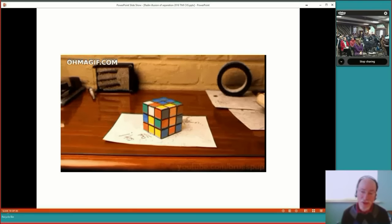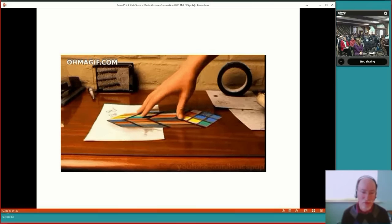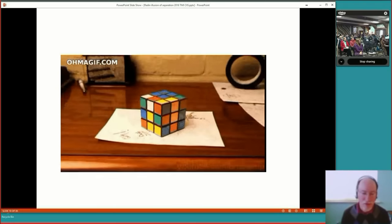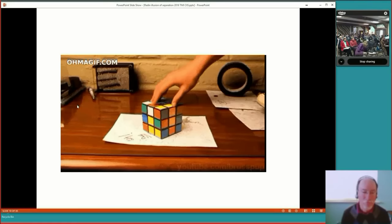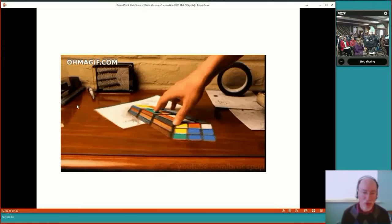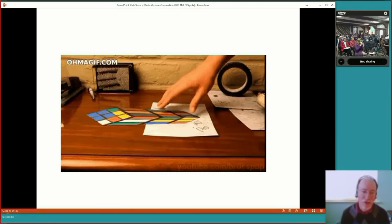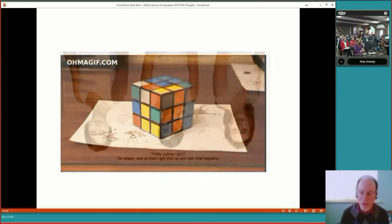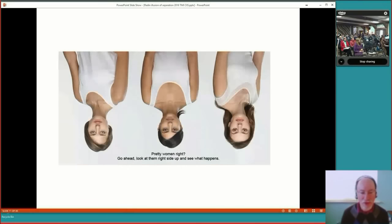Here's another one having to do with foreshortening. This one, of course, taking advantage of what you have learned about perspective. And your brain, once it has learned that, makes it very difficult to see it in any other way.